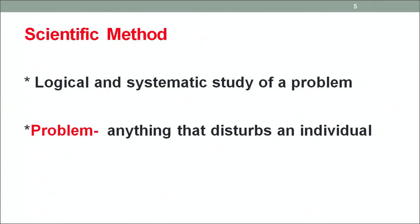Now let us define scientific method. Scientific method is a logical and systematic study of a problem. The basic words are logic and systematization — we are not haphazard. Logical means there is one and only one definite way of arriving at the conclusion, and one and only one solution; there is no alternative. So that requires precision on our part.